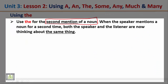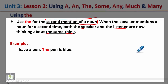Use the for the second mention of a noun. When the speaker mentions a noun for a second time, both the speaker and listener are thinking about the same thing. Example: I have a pen — the pen is blue. This is the first mention of 'pen', and the second time it must be preceded by the definite article the.